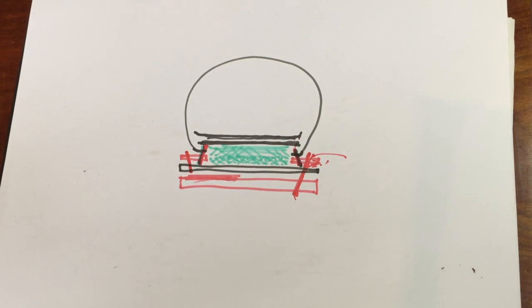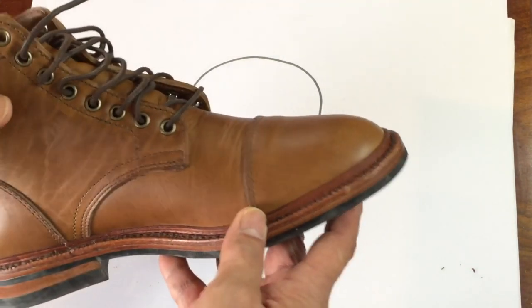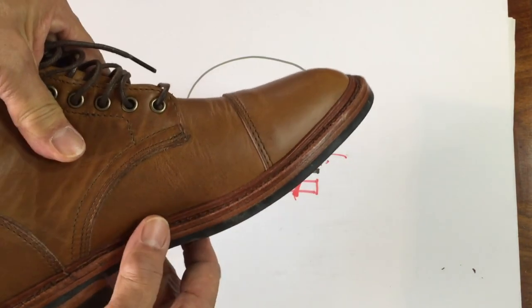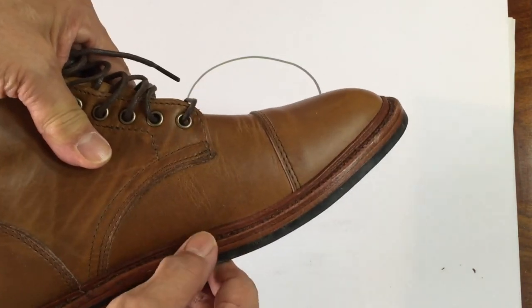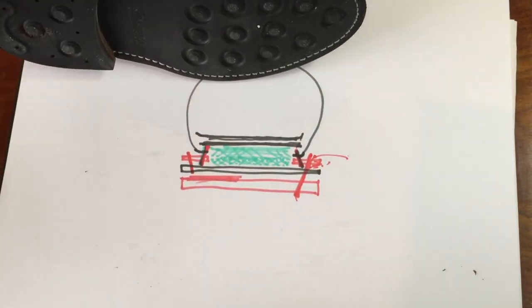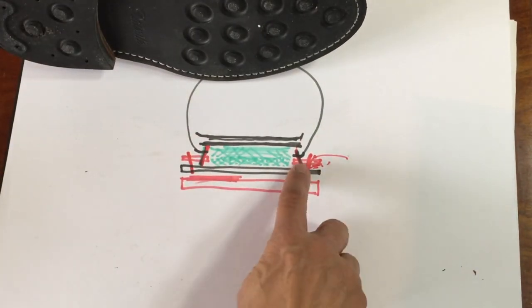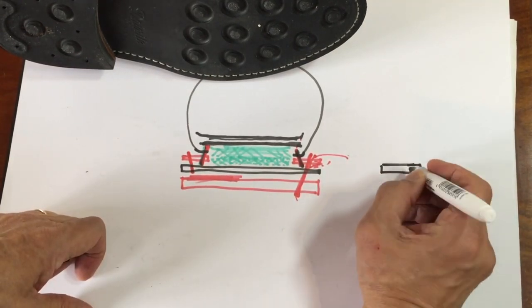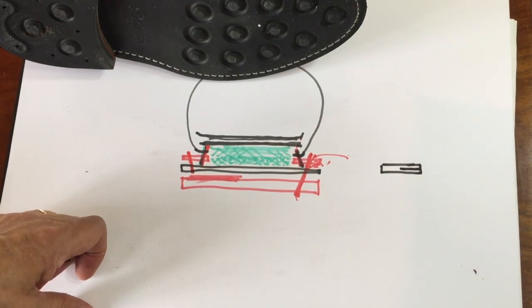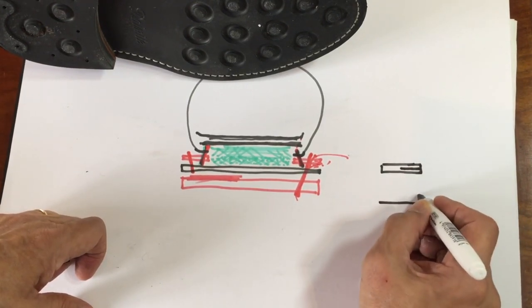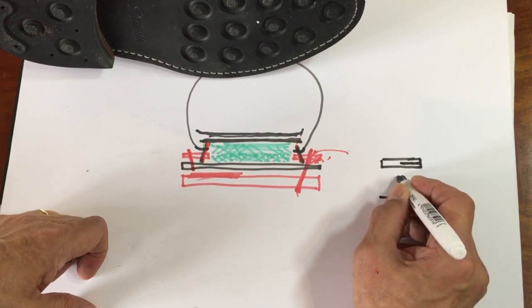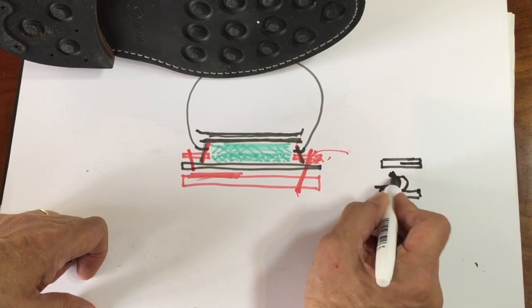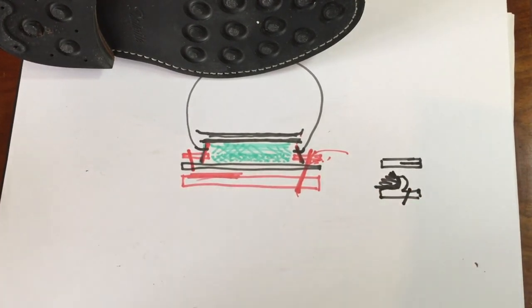Now, if we look at different welts, this flange here is called a split reverse welt. Sometimes it's confused with a storm welt. Now, a split reverse welt is basically that welt, if you think about it. A thin piece of leather like that is split part of the way through, and then it's flanged up, and the uppers are put there, and the Goodyear stitch goes through there.